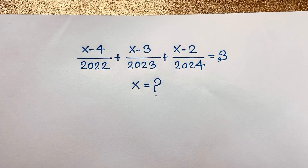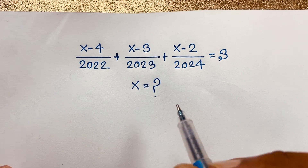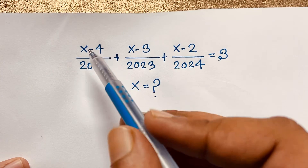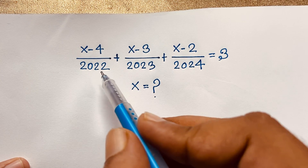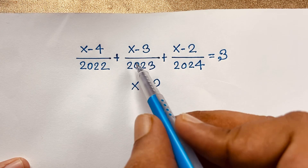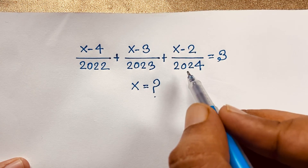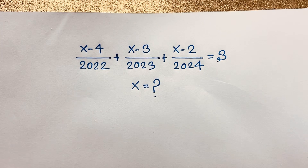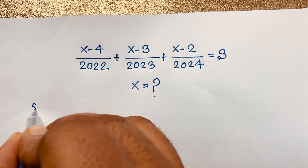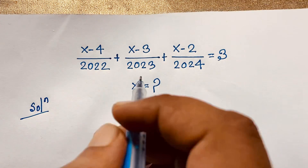Hello everyone, welcome to Rasha's classroom. Today we are solving an interesting math problem: (x minus 4) over 2022 plus (x minus 3) over 2023 plus (x minus 2) over 2024 equals 3. What is x? I will solve this using an easy method.